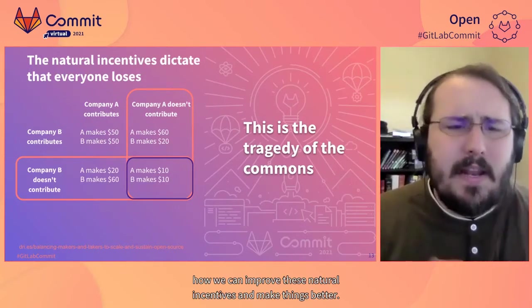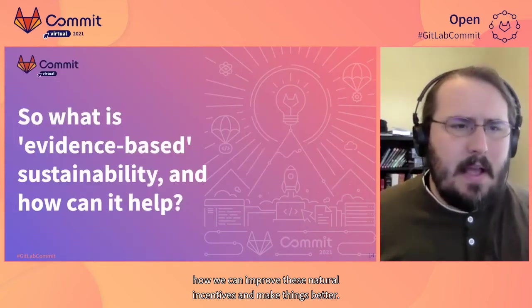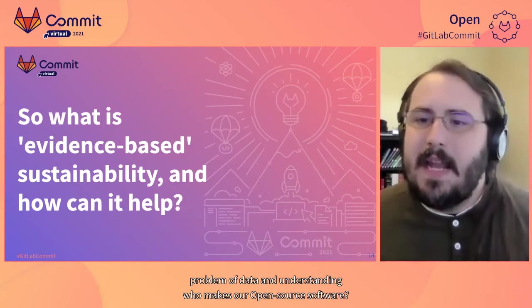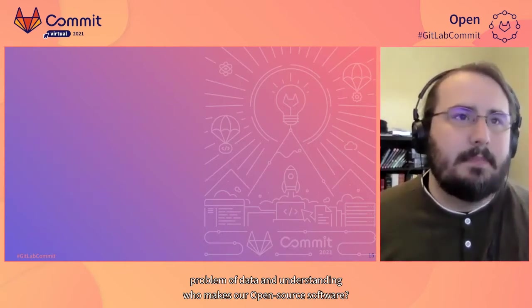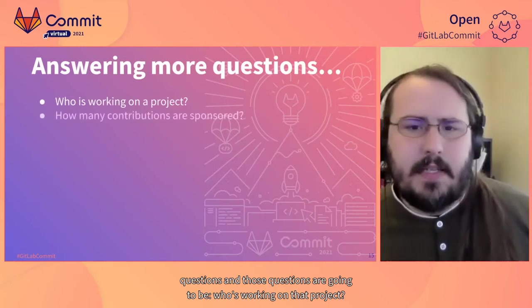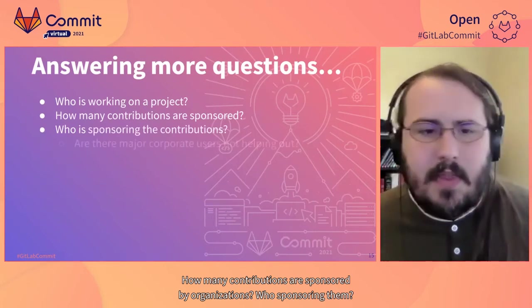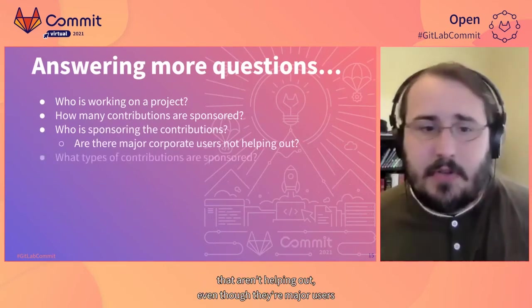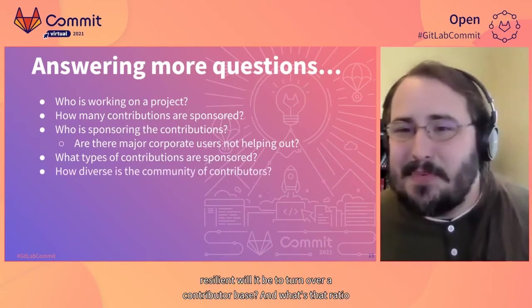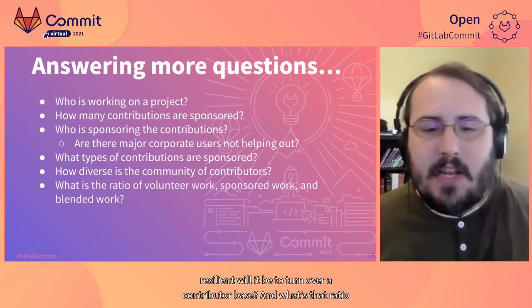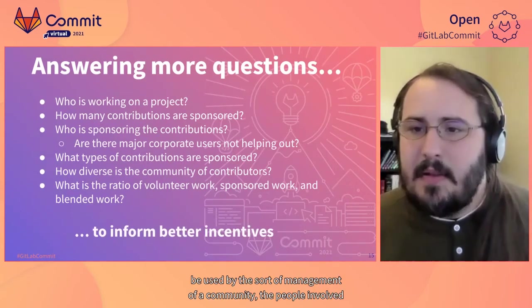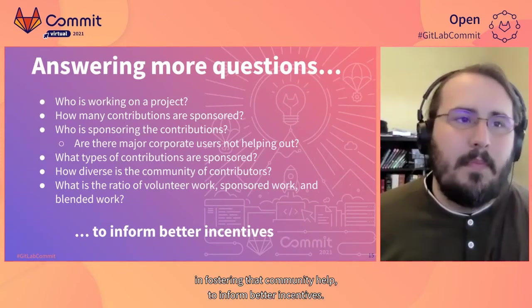We're going to talk about how we can improve these natural incentives and make things better. What do we mean by evidence-based sustainability, and how does it solve this problem of perverse incentives and the lack of data about who makes our open source software? We need to answer questions such as: who's working on that project, how many contributions are sponsored by organizations, who's sponsoring them, are there major corporate users that aren't helping out, what types of contributions — whether code or non-code — get sponsored, how diverse is that community of contributors, how resilient will it be to turnover in the contributor base, and what's the ratio of volunteer to sponsored work? All of these can be used by community leadership to inform better incentives.